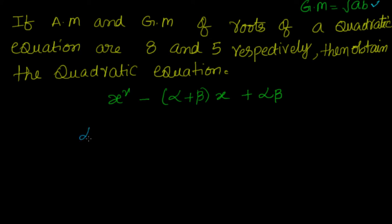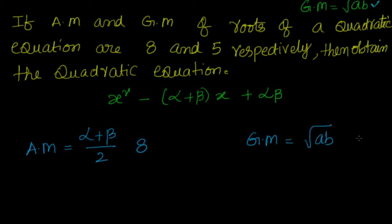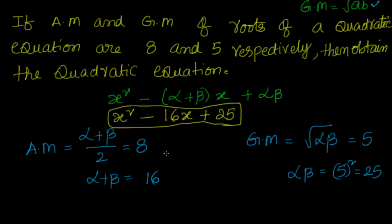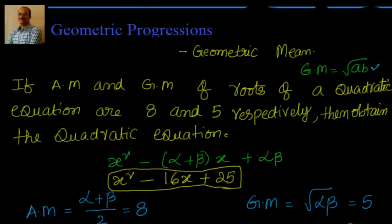Given that alpha plus beta divided by 2 equals AM equals 8, so alpha plus beta equals 16. And the GM, which is the square root of alpha beta, equals 5, so alpha beta equals 25. Therefore, the quadratic equation is x squared minus 16x plus 25 equals zero. That covers some simple examples related to geometric mean.